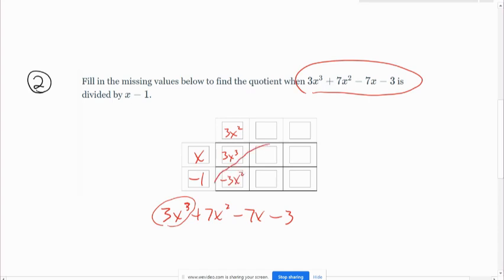And then we want these two boxes to add up to 7x squared. So this would have to be 10x squared. So this has to be 10x, and this would be negative 10x. And then we want these two boxes to add up to negative 7x. So this is going to be a positive 3x, which means this has to be 3.